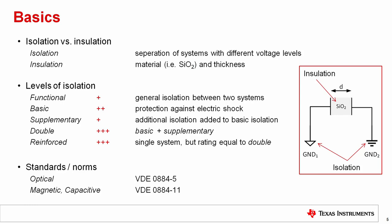Isolation versus insulation — these two terms are often mixed up. Isolation refers to the separation of systems with different voltage levels, while insulation refers to the material used and its thickness. There are different levels of isolation: functional, basic, supplementary, double, and reinforced. Functional isolation refers to the general separation between two systems. Basic isolation already protects against electric shock. Additional isolation added to basic results in double isolation. Reinforced isolation is a single system but rated equivalent to double isolation. An example of supplementary isolation would be the coating of a transformer.